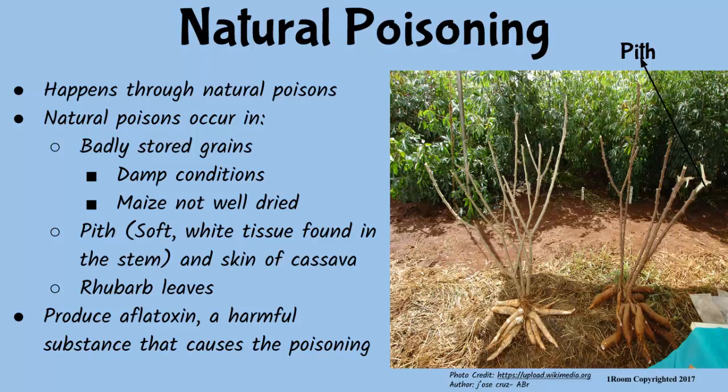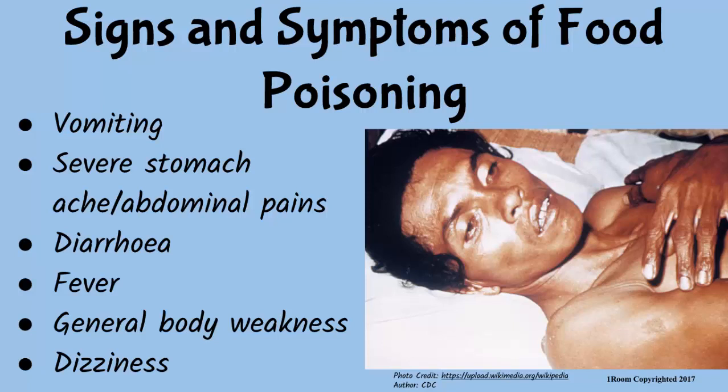Foods like cassava can also be naturally poisonous — specifically the pit of the cassava. The symptoms of food poisoning include vomiting, diarrhea, or both, severe abdominal pain or stomach aches, fever, weakness, and dizziness.